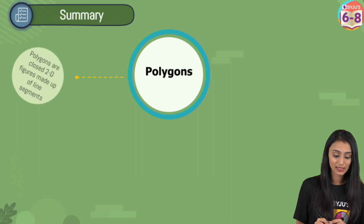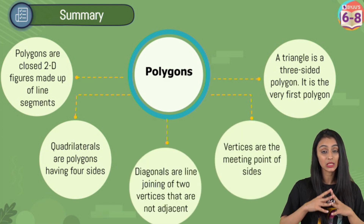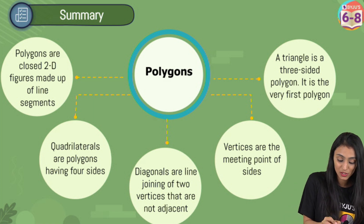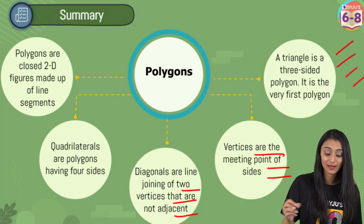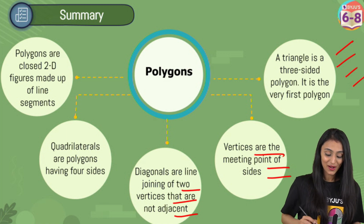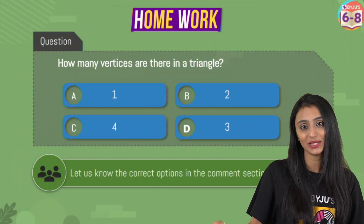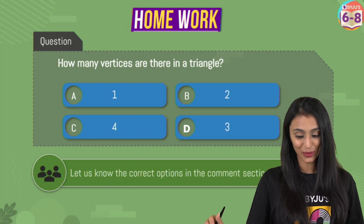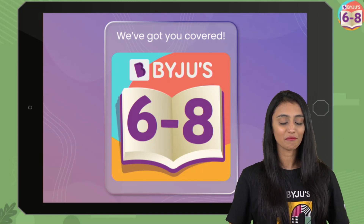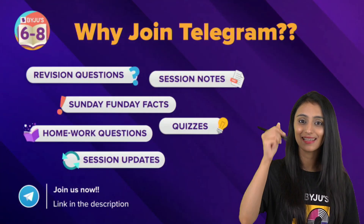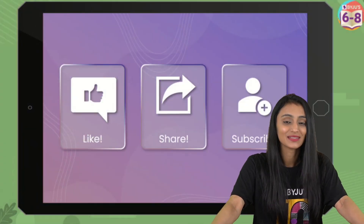Let's quickly summarize what we learned today. We talked about polygons — a closed two-dimensional figure made up of line segments. We learned about quadrilaterals — polygons having four sides. We learned about diagonals — line segments joining two non-adjacent vertices. Vertices are the meeting points of sides, and a triangle is a three-sided polygon, the very first polygon. Try this at home: how many vertices are there in a triangle — one, two, four, or three? Let us know in the comments. Thank you so much, bye!